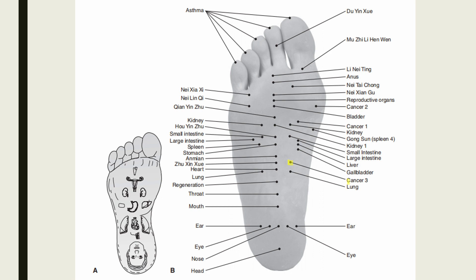The Cancer 3 point is located 0.6 unit distal to the medial side of the lung point, or 5.2 units from the heel and 1 unit medial to the midline. Indications include upper esophageal, lung, neck, throat, and nose tumors.